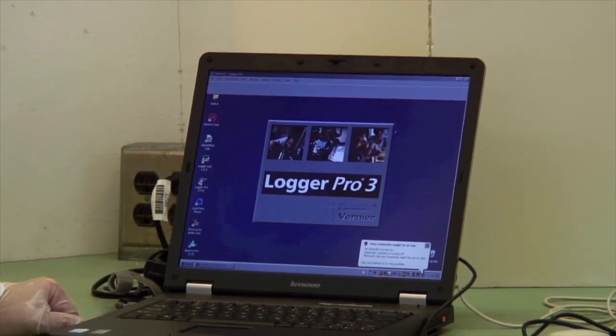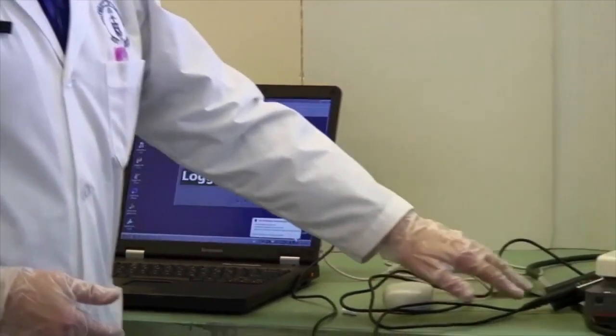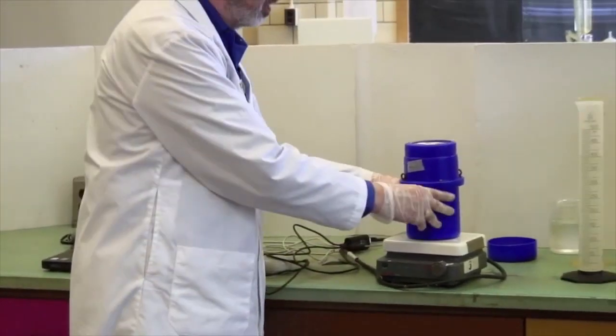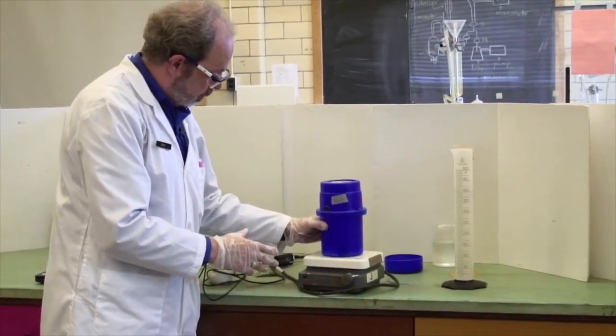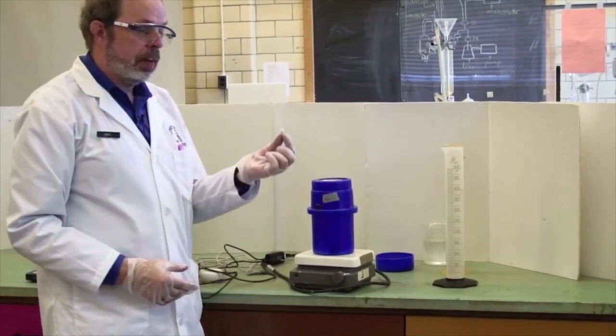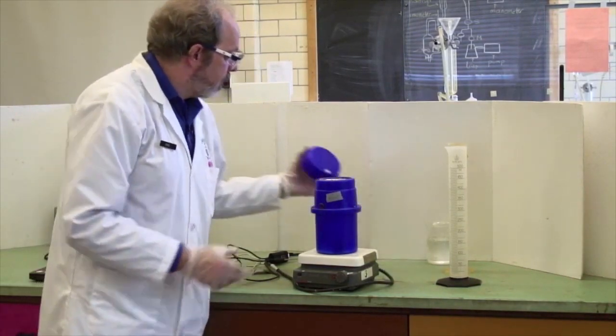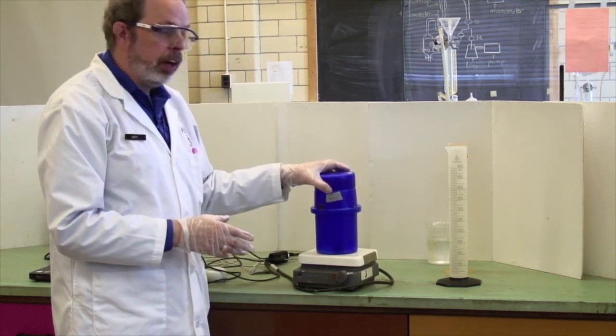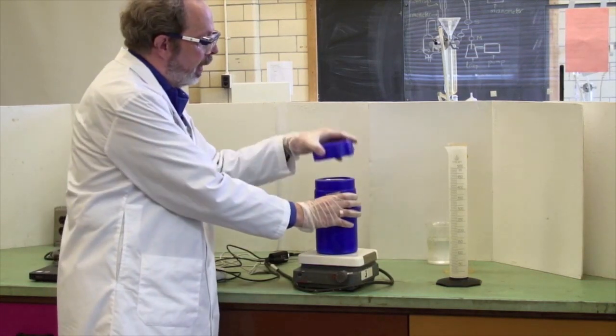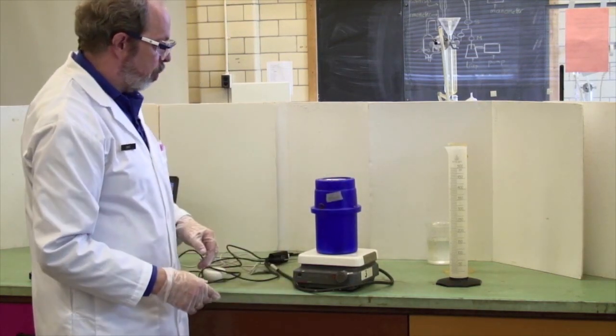While we're waiting for that, let's talk about the calorimeter itself. The calorimeter is just a Dewar flask. You should have a magnetic stir bar inside it and when it's actually operating we put a lid on it so that there's minimal heat loss to the environment.